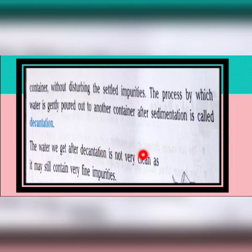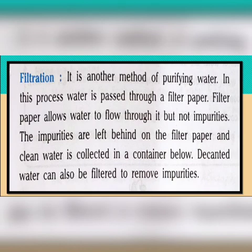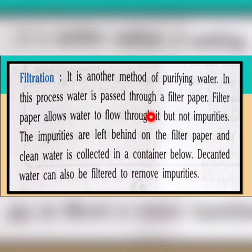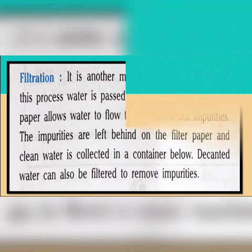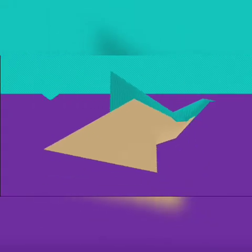After sedimentation, the water is gently poured out into another container without disturbing the settled impurities, as shown in the picture. This process is called decantation. However, the water we get after decantation is not very clean, because it may still contain some fine impurities, so another method — filtration — is used to remove those fine impurities.